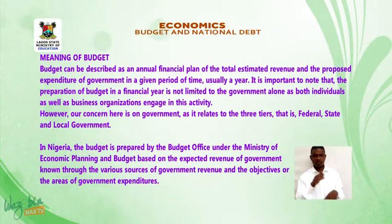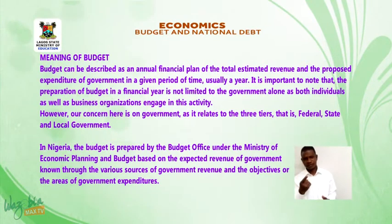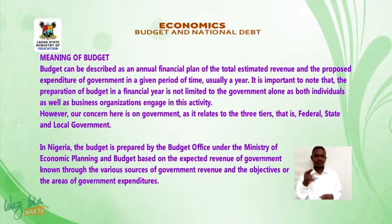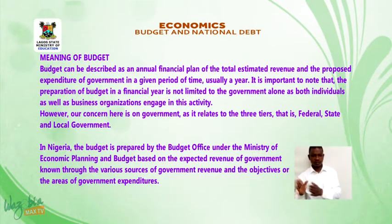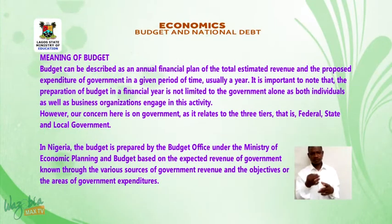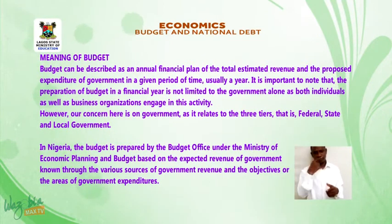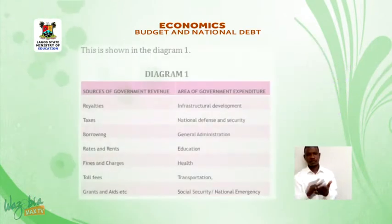However, our concern here is on government as it relates to the three tiers — federal, state, and local government in Nigeria. The budget is prepared by the budget office under the Ministry of Economic Planning and Budget, based on the expected revenue of government known through the various sources of government revenue and the objectives or areas of government expenditure.